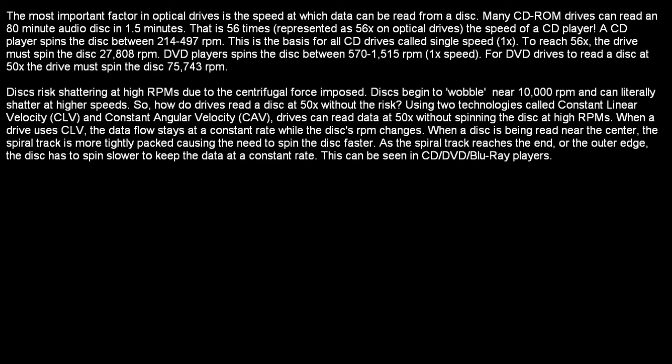So, how do drives read a disk at 50x without the risk? Using two technologies called constant linear velocity and constant angular velocity, drives can read data at 50x without spinning the disk at high RPMs. When a drive uses CLV, the data flow stays at a constant rate while the disk's RPMs change. When a disk is being read near the center, the spiral track is more tightly packed, causing the need to spin the disk faster. As the spiral track reaches the outer edge, the disk has to spin slower to keep the data at a constant rate. This can be seen in stand-alone players.